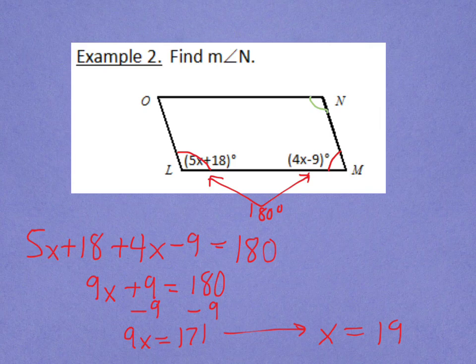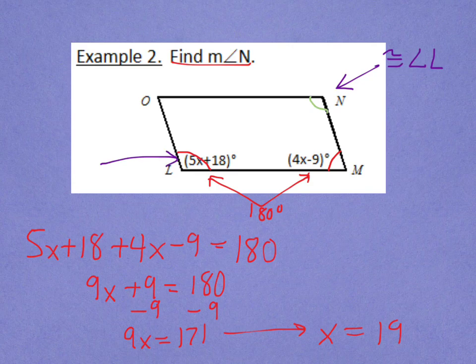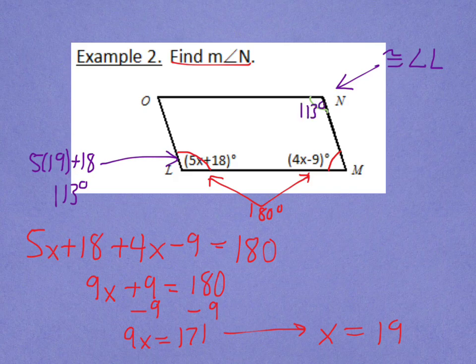Have I answered the question yet? Not yet. I haven't found the measure of angle n. Angle n, I know because opposite angles of a parallelogram are congruent, that that one is going to be congruent to angle l. So, I should figure out what the measure of angle l is. So, 5 times 19 plus 18 would give me 113 degrees. Therefore, I also know that angle n is 113 degrees.